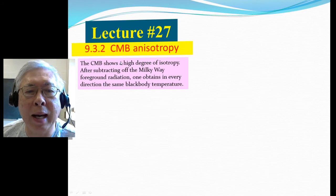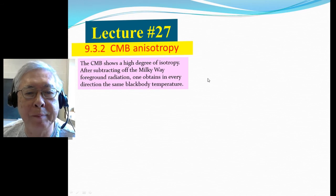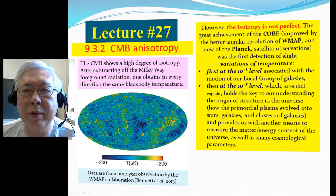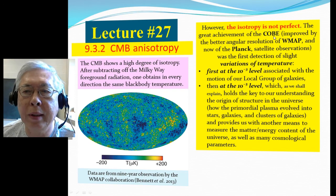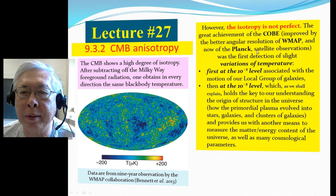The CMB shows a high degree of isotropy — it looks the same in every direction. Abstracting out the Milky Way foreground radiation, we obtain the very same black body temperature in every direction. However, the isotropy is not perfect. The great achievement of COBE, improved by better angular resolution of WMAP, and now Planck satellite observations, was the first detection of slight variation of temperature.